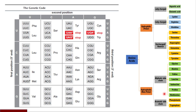Amino acids under nonpolar include aliphatic and aromatic side chains. Under aromatic side chain we have phenylalanine and tryptophan. Under aliphatic side chain we have glycine, alanine, valine, leucine, isoleucine, proline, and methionine — these are nonpolar aliphatic side chain amino acids.